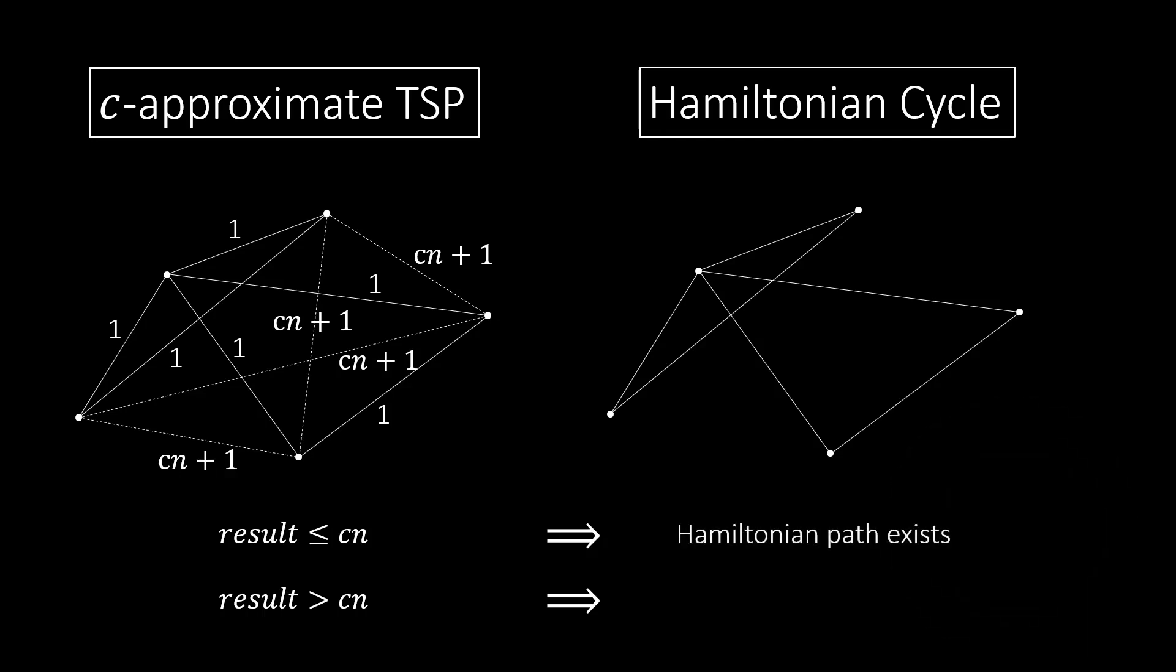If the result is a cycle no longer than C times n, it uses only edges of length 1. These edges also exist in the original graph. So a Hamiltonian cycle exists in the original graph. On the other hand, imagine that the result is a cycle longer than C times n. Then no tour using only edges of length 1 can exist. Otherwise, this route would have length n and the C approximation would have found a result of at most C times n. But if there is no tour with edges of length 1, then there is also no Hamiltonian cycle in the original graph.